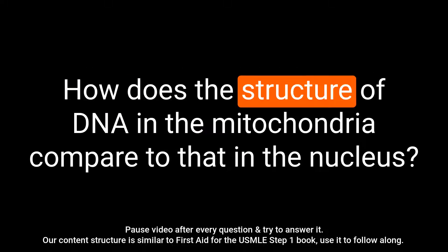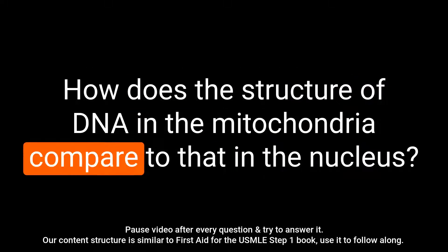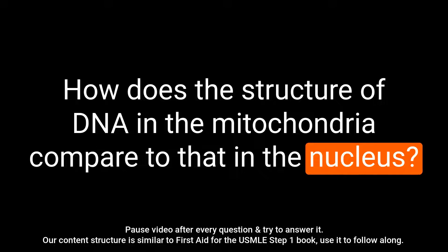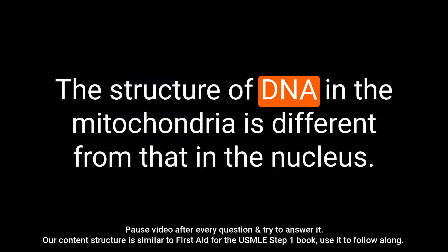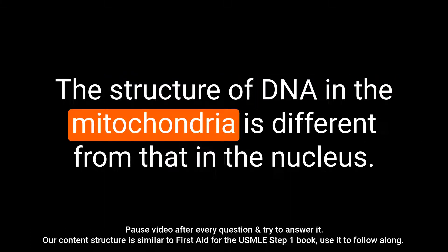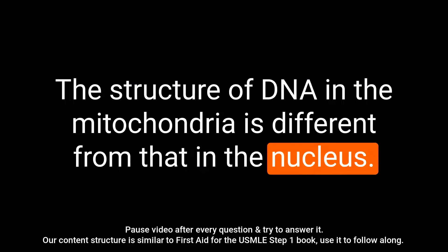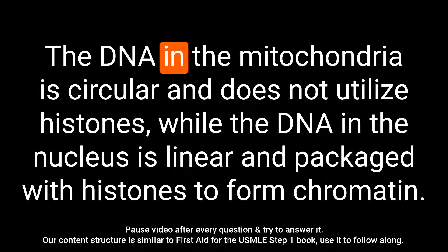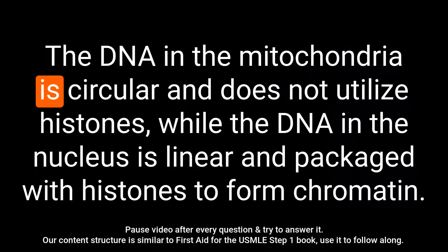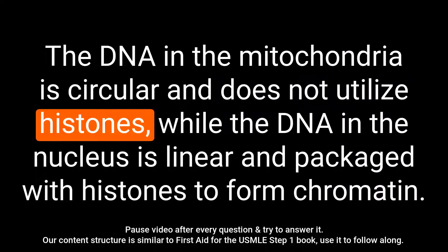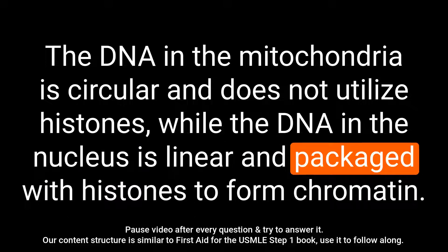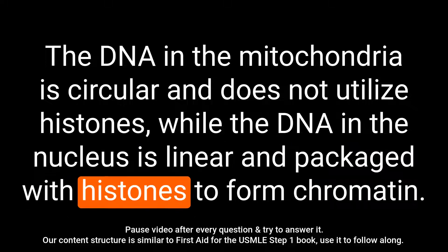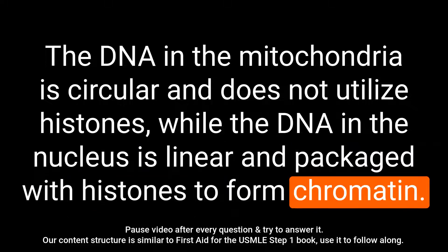Question: How does the structure of DNA in the mitochondria compare to that in the nucleus? Answer: The DNA in the mitochondria is circular and does not utilize histones, while the DNA in the nucleus is linear and packaged with histones to form chromatin.